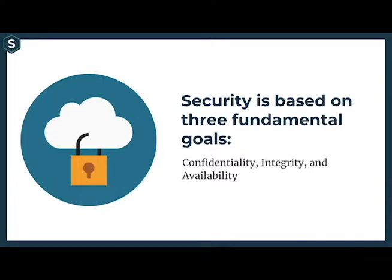Security is based on three fundamental goals, commonly referred to as the CIA triad: confidentiality, integrity, and availability. This applies to each one of your assets. Confidentiality means any important information you have — such as employee, client, or financial records — should be kept confidential. This information should only be accessed by people or systems that you have given expressed permission to do so.